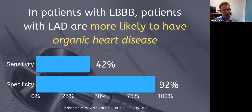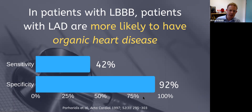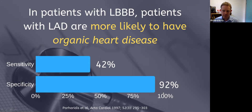However, if you do see left axis deviation in left bundle branch block, patients are more likely to have organic heart disease like valvular heart disease or cardiomyopathy. Evidence from a 1997 study shows that the specificity of left axis deviation for organic heart disease is 92%. So if you see left axis deviation in left bundle branch block it's quite common, but have a think about whether that might represent organic heart disease in your patient.